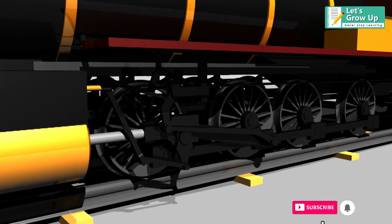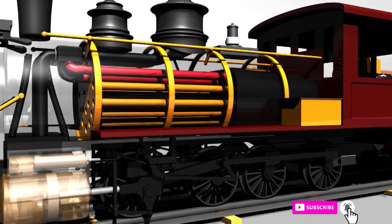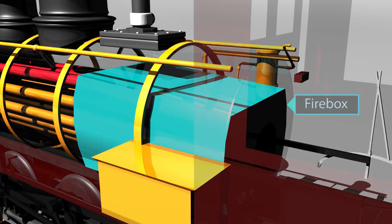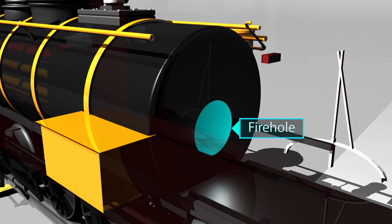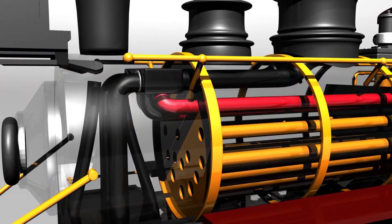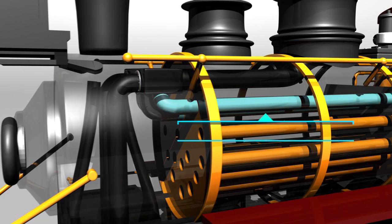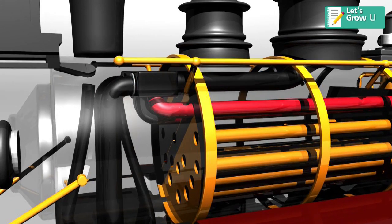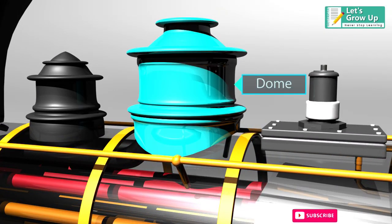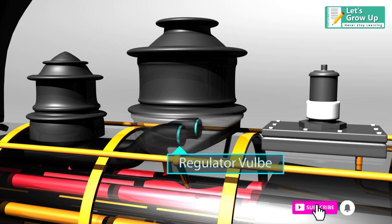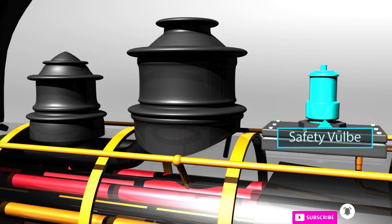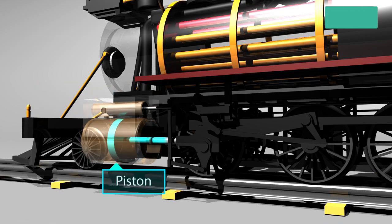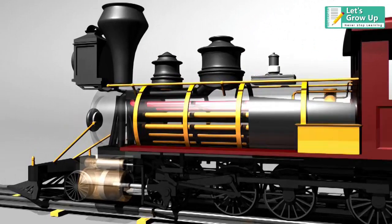The steam engine of a locomotive consists of different parts. These are: firebox, fire flue, superheater header, superheater element pipes, steam pipe, dome, regulator valve, safety valve, cylinder, piston, and chimney.